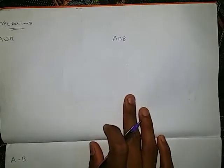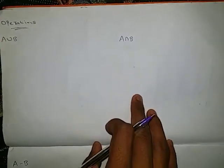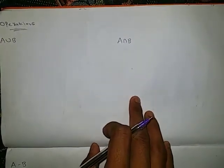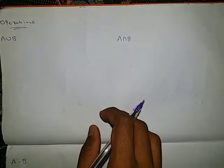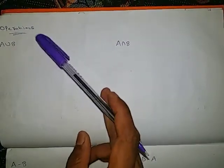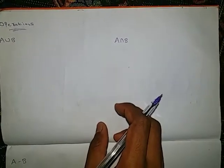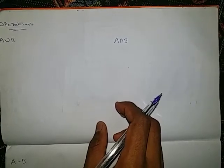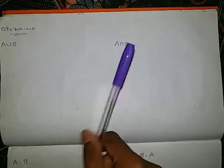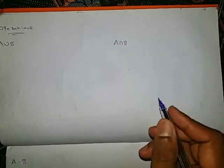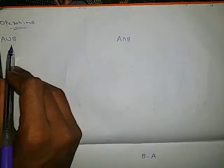Let us look at one more question. There are some operations which are very important — they may come for one mark, two marks, or even four marks. The operations of sets are: A union B, A intersection B, A minus B, and B minus A. So let us check how to solve A union B.